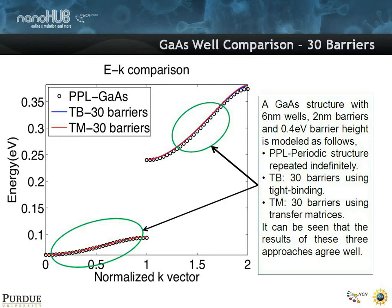There is a tool on the Nanohub called the Periodic Potential Lab. You can enter the same parameters we just looked at — a gallium arsenide-type structure with six nanometer wells, two nanometer barriers, and a 0.4 electron volt barrier height — and compute the periodic potential lab case, plotted here in dots. If you put in the tight-binding or transfer matrix approach calculation of 30 barriers, you basically see how they pretty much overlap. These theories of the Kronig-Penney model of an infinitely periodic structure and a finite superlattice basically agree with each other.